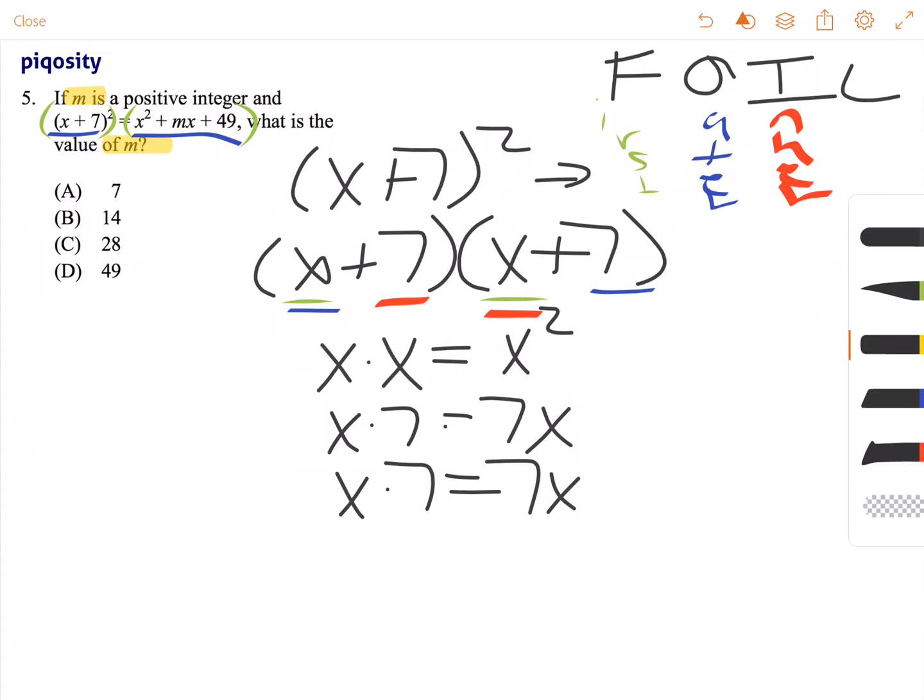And then our last, so the 7 and the 7, or the two constants. So 7 times 7 is equal to 49.